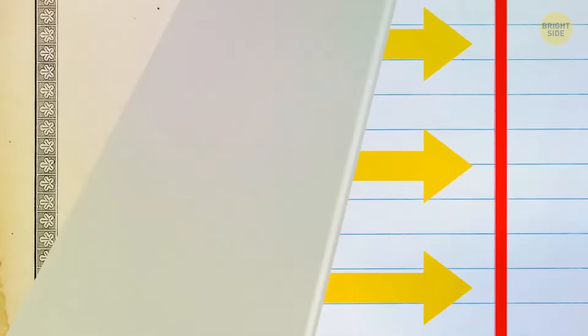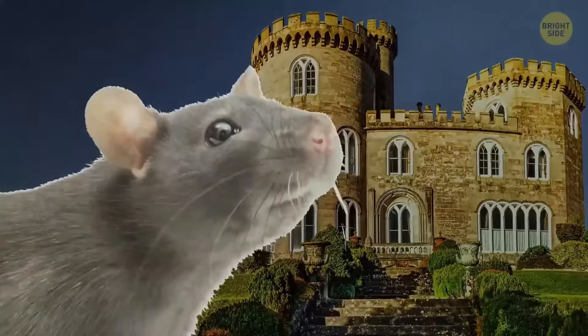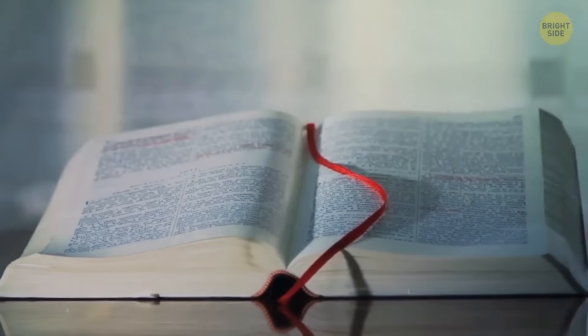Margins on paper aren't for writing in dates and numbering lists. They were originally added to serve a protective function. Back in the day, rats used to be a pesky problem in people's homes and paper was one of their favorite snacks. Margins were added as a safeguard so that the rats would nibble on blank paper rather than taking a bite out of your important work.